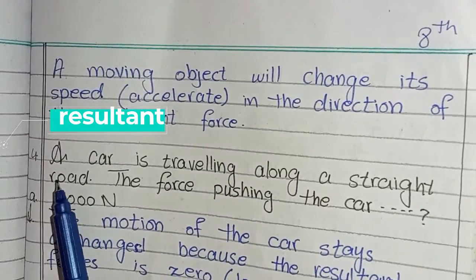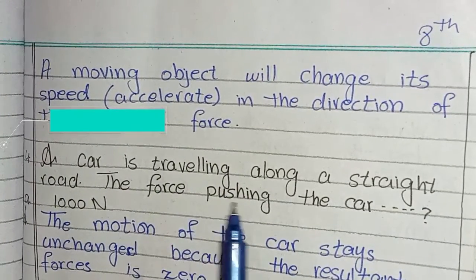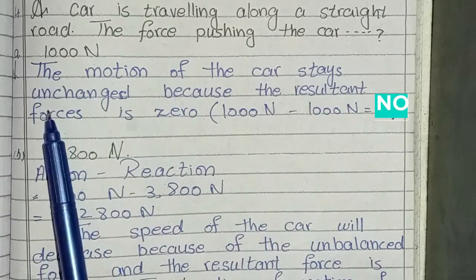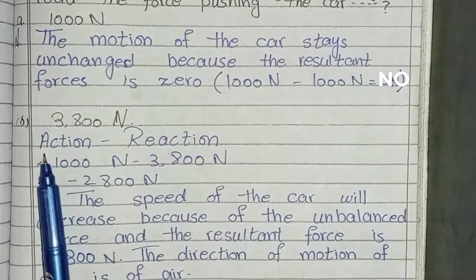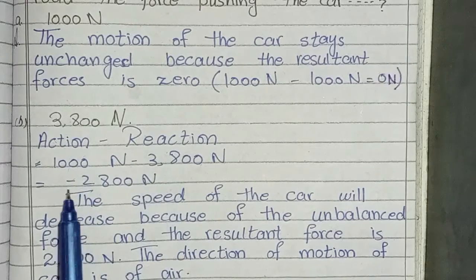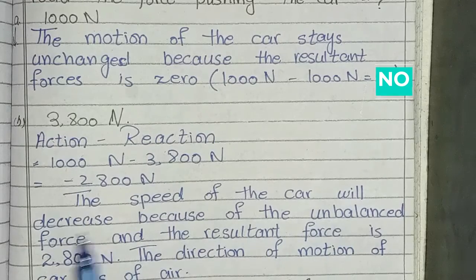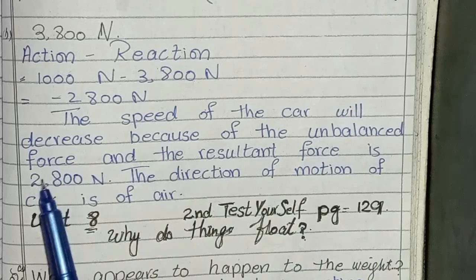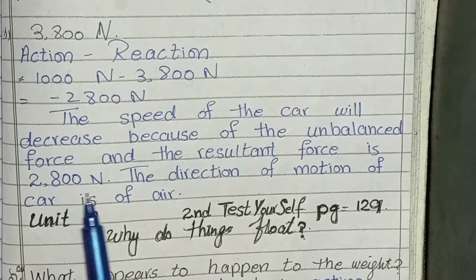Fourth question: A car is traveling along a straight road. The force pushing the car — in part (a), the motion of the car stays unchanged because the resultant force is zero. In part (b), the speed of the car will decrease because of the unbalanced force, and the resultant force is 2800 newtons.